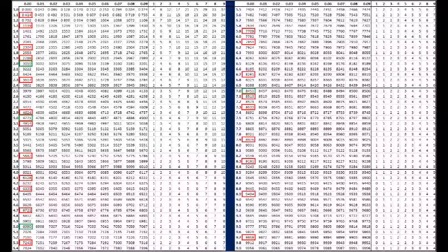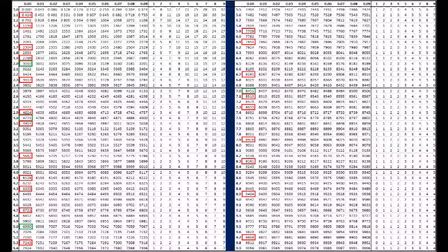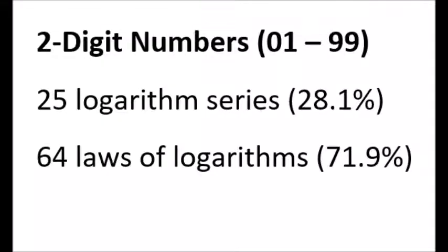At a glance, these are the numbers on the table for which we must use the series expansion. In summary for the two digit numbers, we must use 25 series expansions and 64 laws of logarithms. Proportionally this is much more favorable than the 50 percent of single digit numbers.